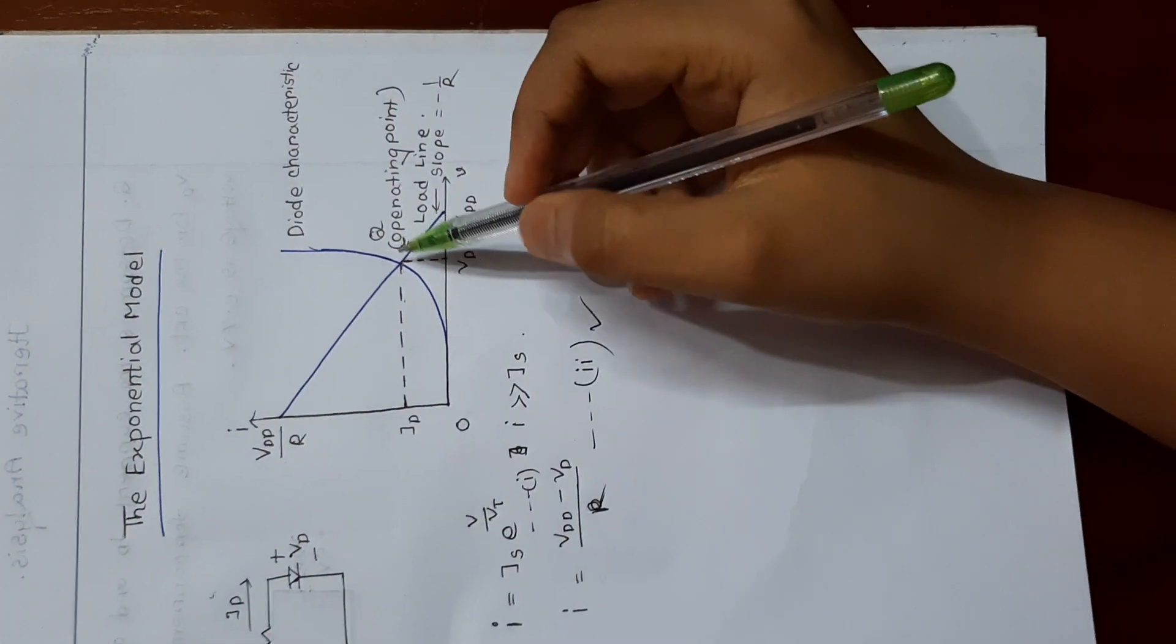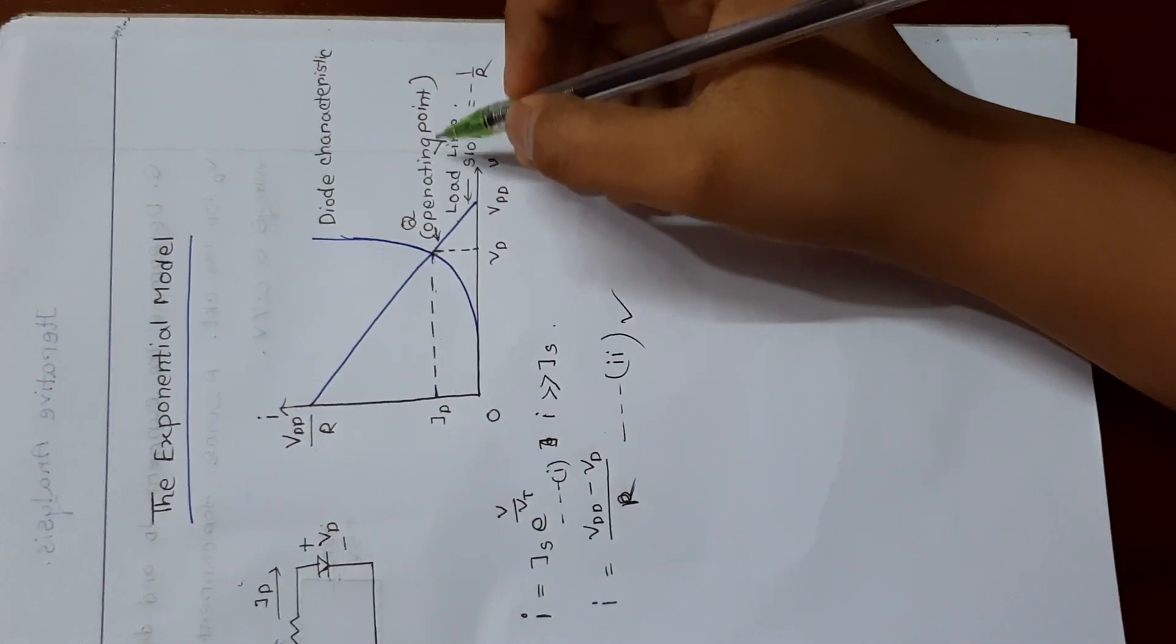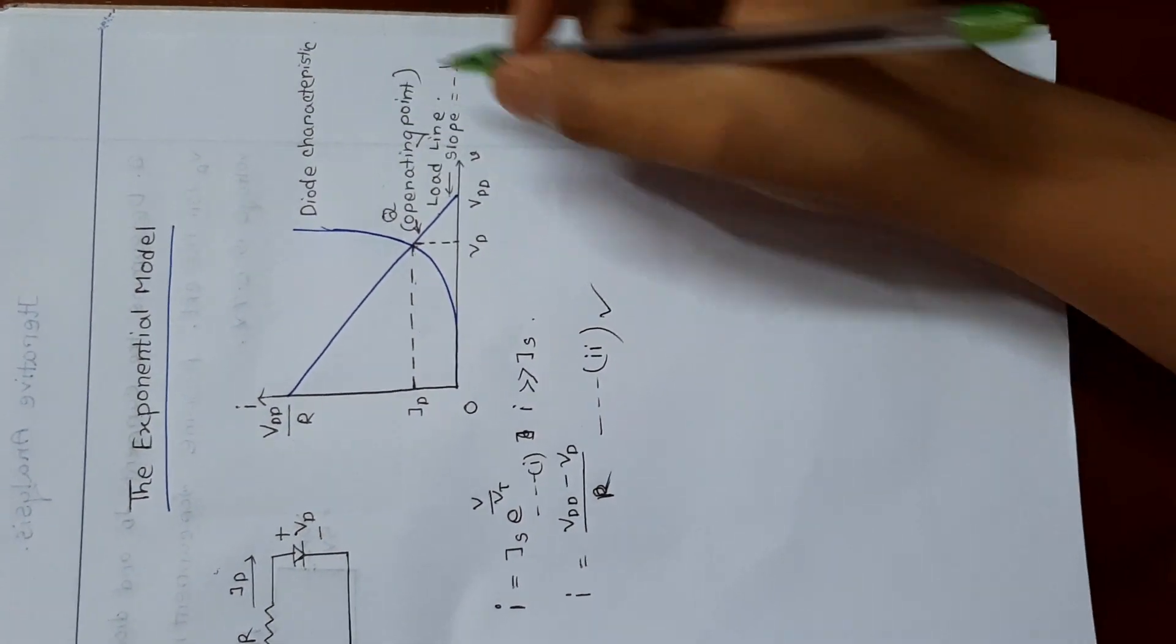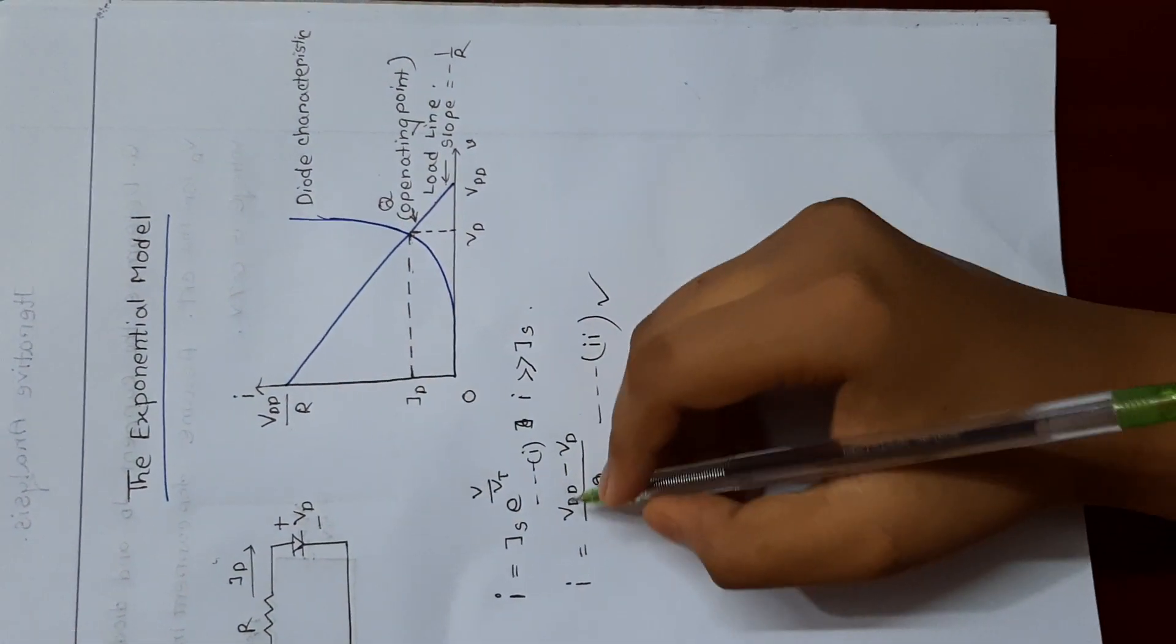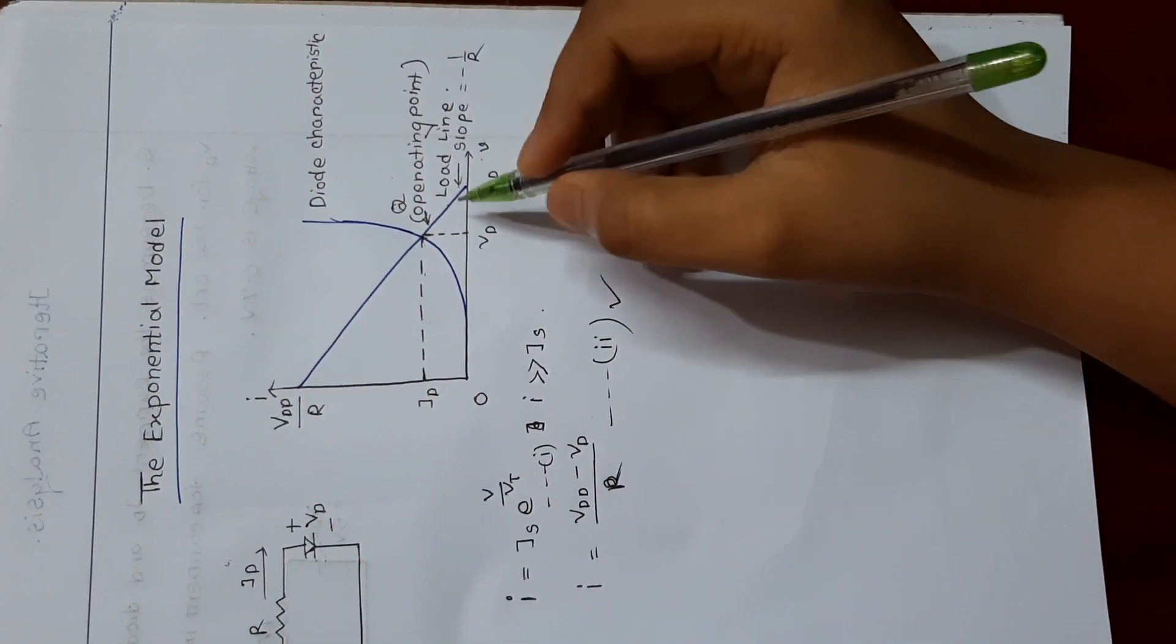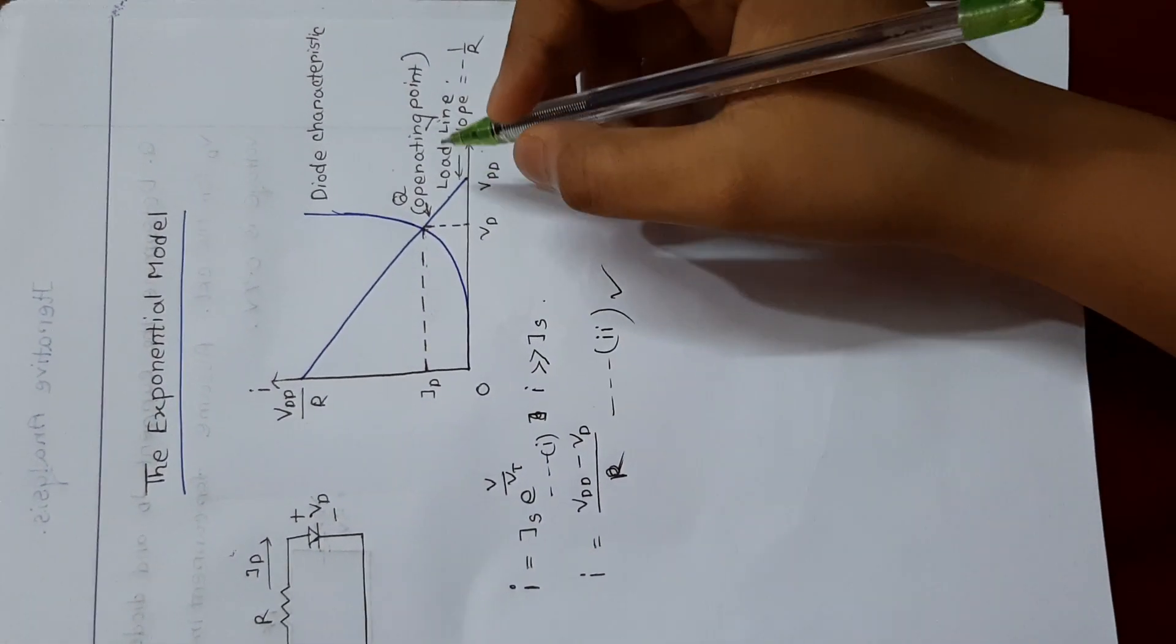And from the exponential equation, we can find the exponential graph. And these two graphs intersect at a point. This point is called the operating point, and we can signify it by using Q.